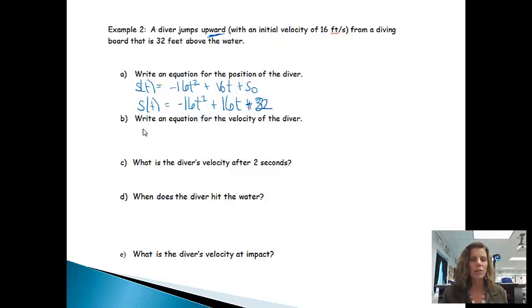The next question says to write an equation for the velocity of the diver. Well, I know to get the velocity, we're going to take the derivative of the position. So taking the derivative of the position formula, we'll get negative 32t plus 16. Remember the 32, since it's a constant, will just be a zero for the derivative.